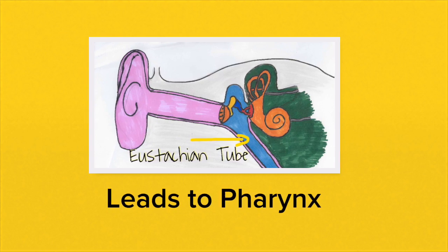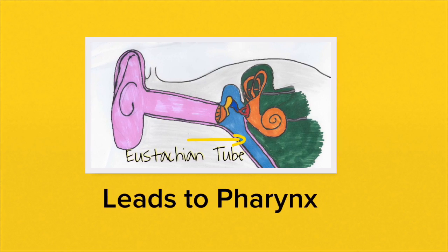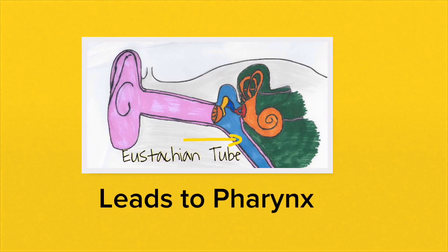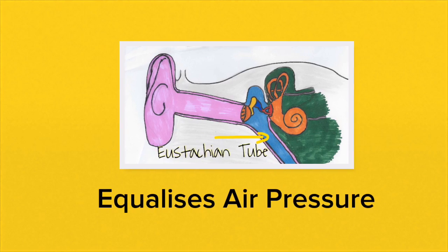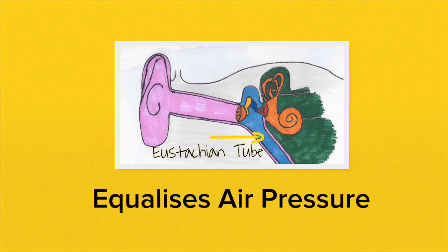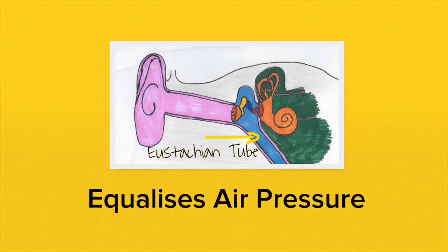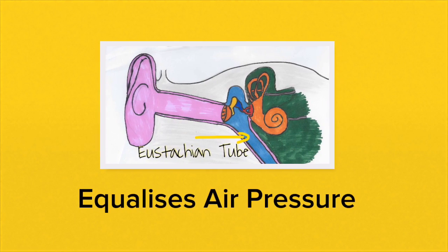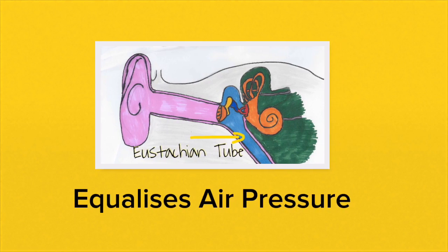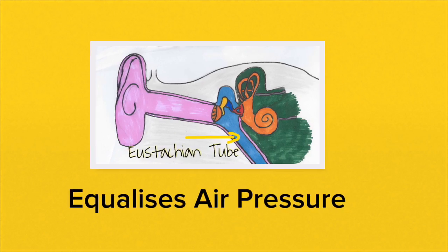The eustachian tube is usually closed and when you yawn or drink sometimes it pops. Its important function is to equalise air pressure on either side of the eardrum.